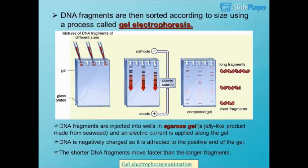DNA fragments are then sorted according to size using a process called gel electrophoresis. The DNA fragments are injected into wells in agarose gel — a jelly-like product made from seaweed — and an electric current is applied along the gel. DNA is negatively charged, so it is attracted to the positive end of the gel. The shorter DNA fragments move faster than the longer fragments.